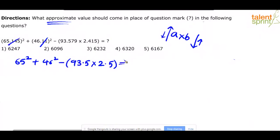What is 65 squared? 65 squared, you all know is 4,225 plus 46 squared. How do you calculate 46? We have discussed all these things in speed math. Within no time, you would know that it's 4,225. Then 46 squared. What is 46 squared? How do you do it? 50 minus 4, so 2,500 minus 400 is 2,100 plus 4 squared, 16. So 2,116 minus 93.5 into 2.5.